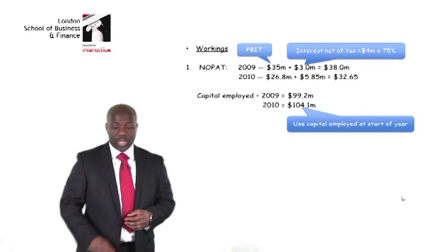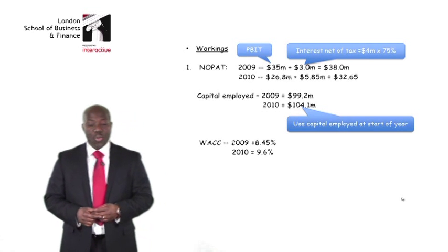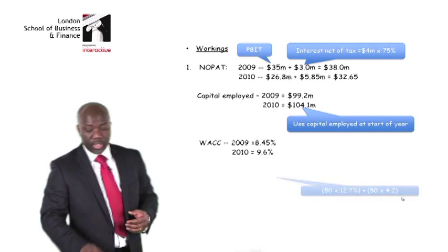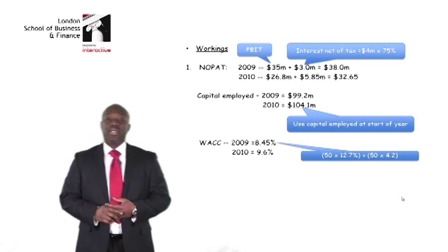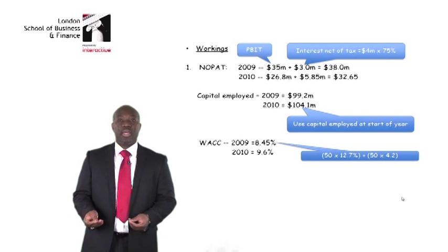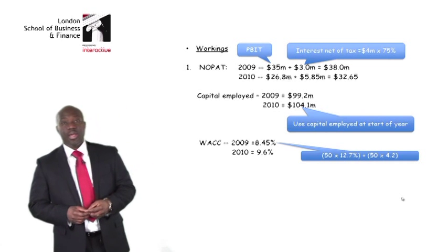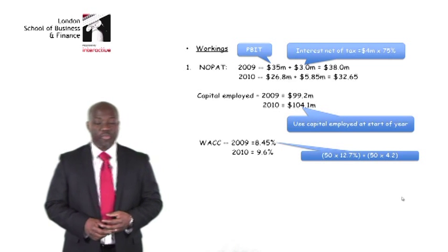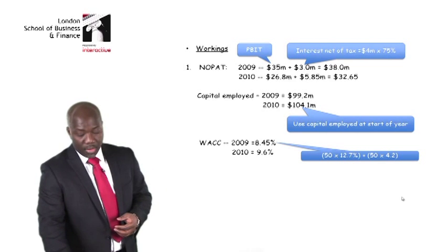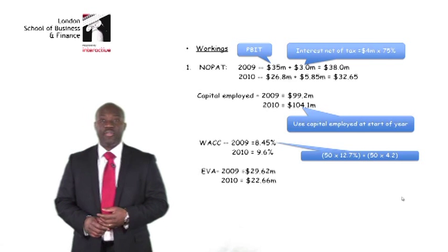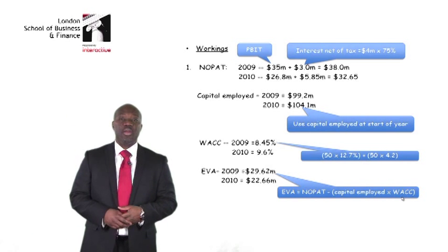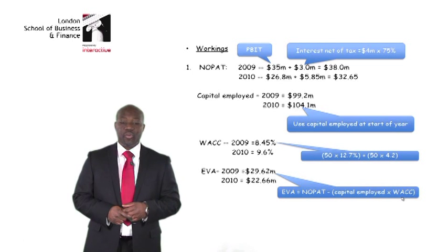From here I'll calculate my WACC. The examiner gave me information on the capital structure — 50% debt and 50% equity — along with a cost of equity of 12.7% and a cost of debt of 4.2%. Using this, I've calculated WACC for both years. My EVA is then calculated as NOPAT minus capital employed multiplied by WACC, which is how I arrived at my EVA values.